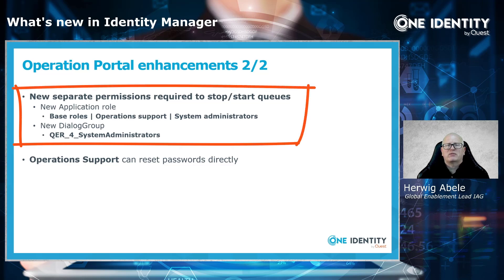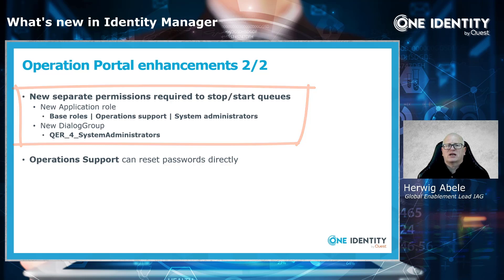Operations was always able to start and stop the process engine and calculation engine of Identity Manager. Now with 8.2, the permission to stop one of these queues is assigned to a separate and specific permission, so not everybody working in the operations portal can do so. Only a specific role is allowed — a new feature was created and assigned to an application role called 'Base Roles Operation Support System Administrators' with the permission group QER for System Administrators.